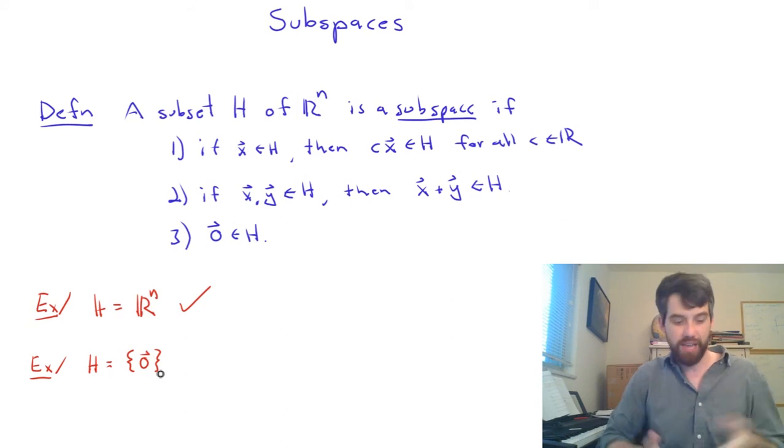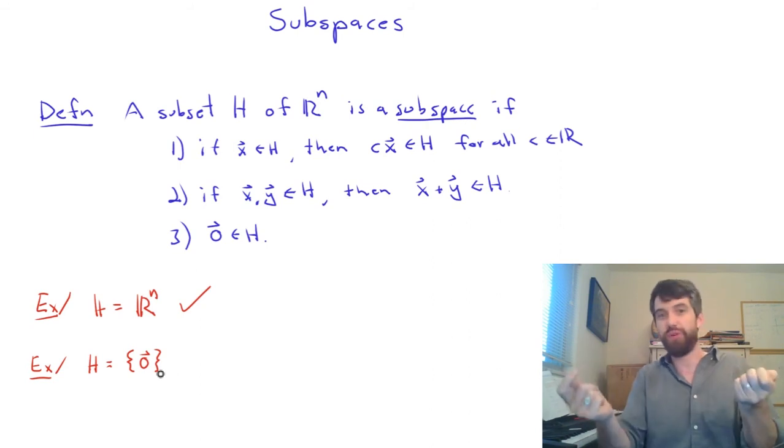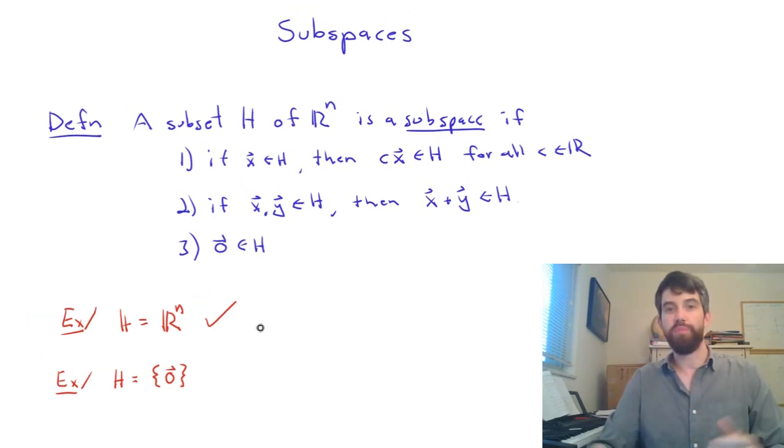Likewise, if I take two vectors inside of my subspace, the only possibility is zero and zero. I add zero and zero, I get the zero vector, and then it's going to be in there as well. And thirdly, the zero vector is inside of there. Alright, so this is also clearly going to be a subspace.